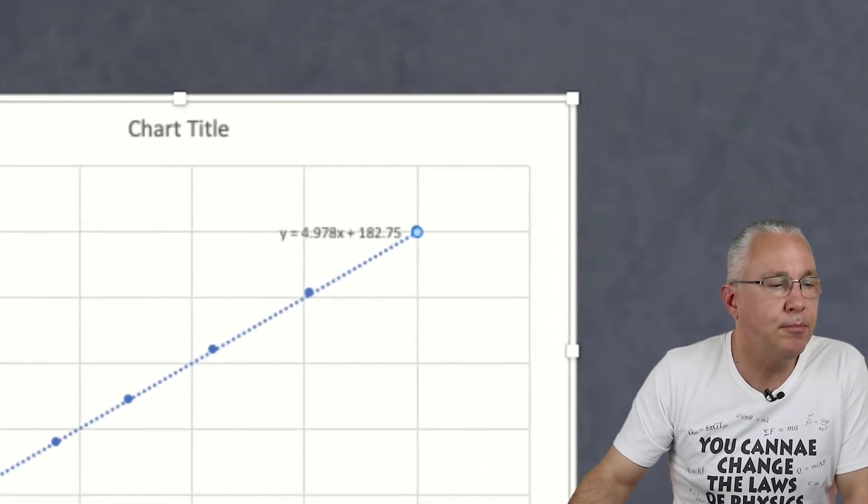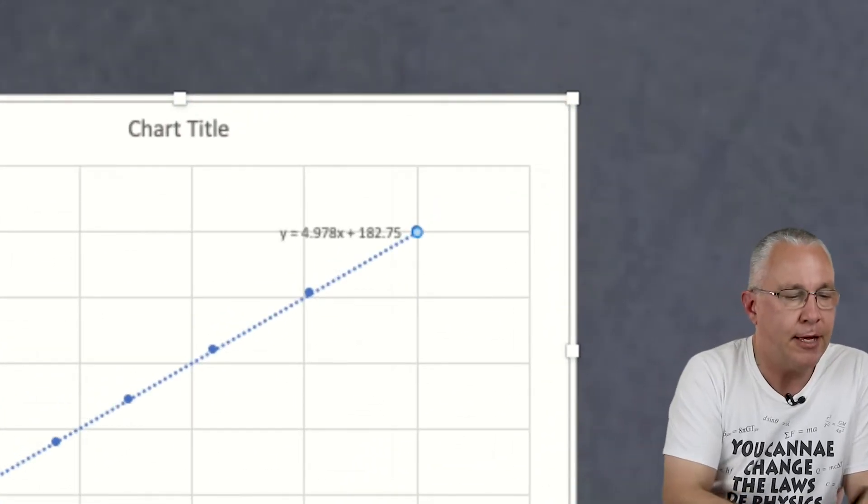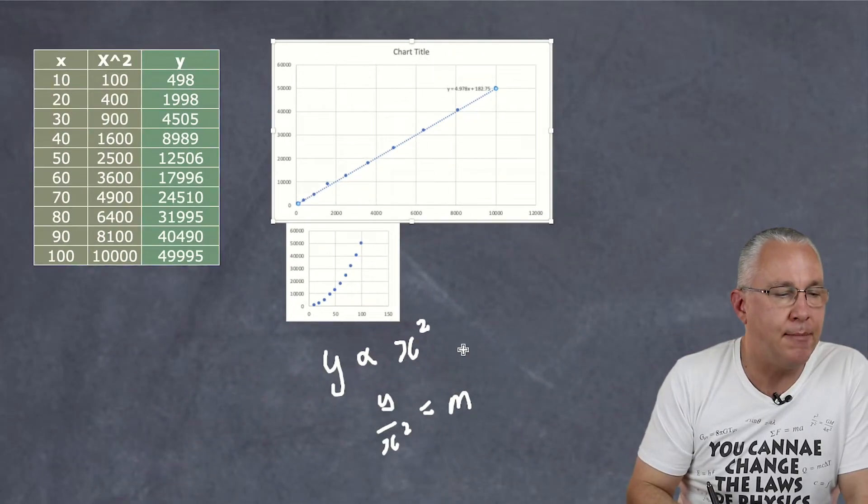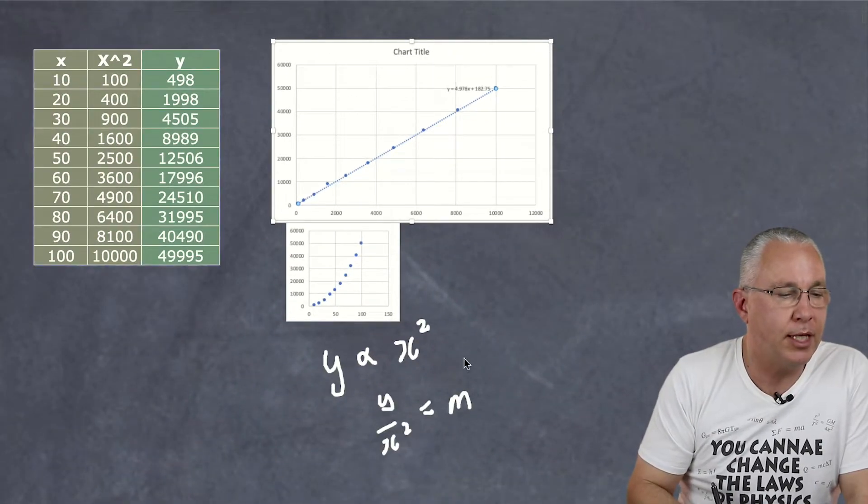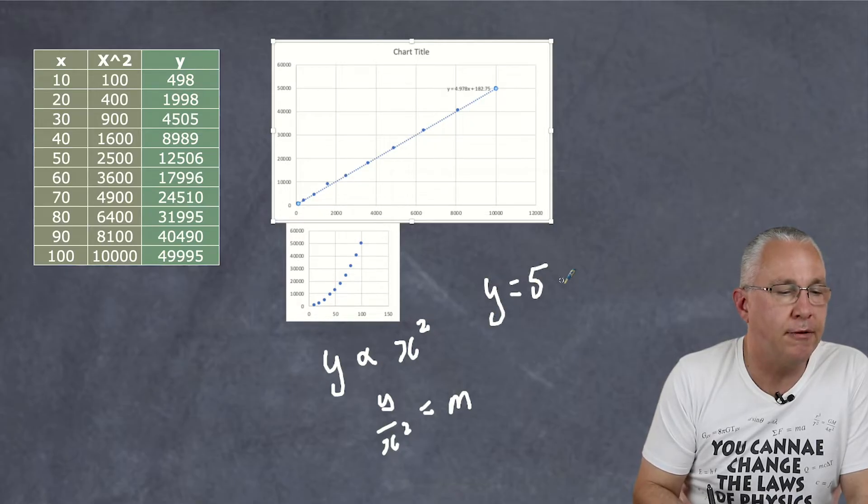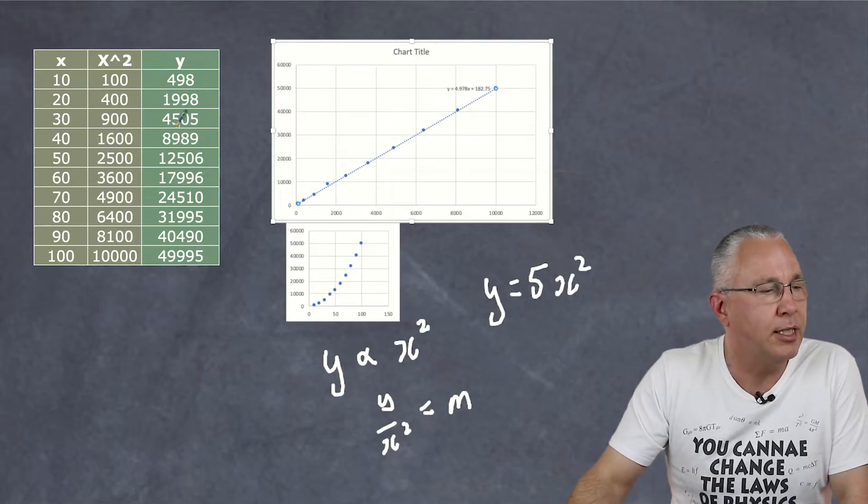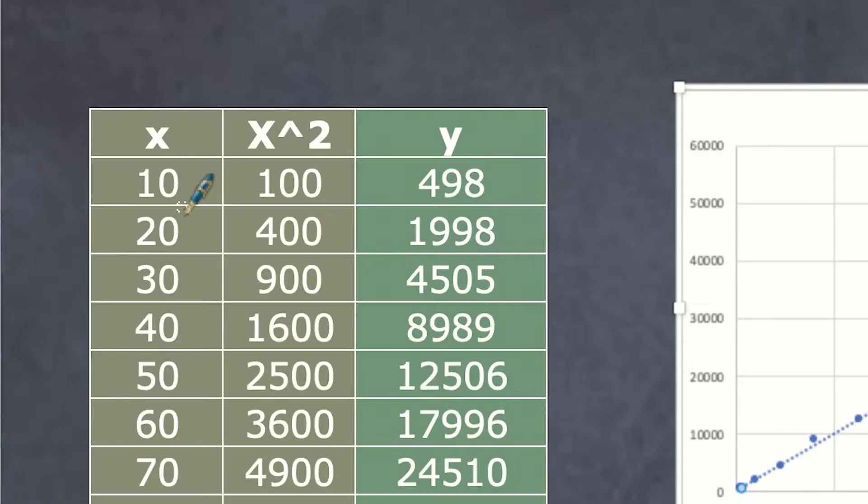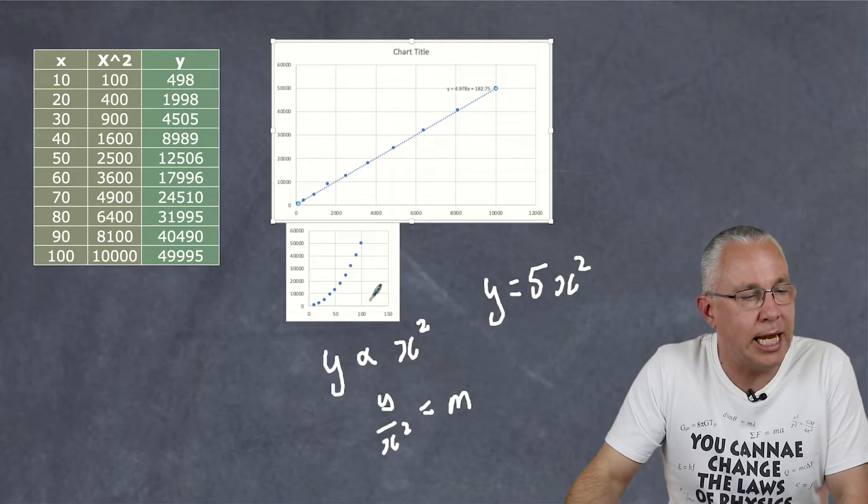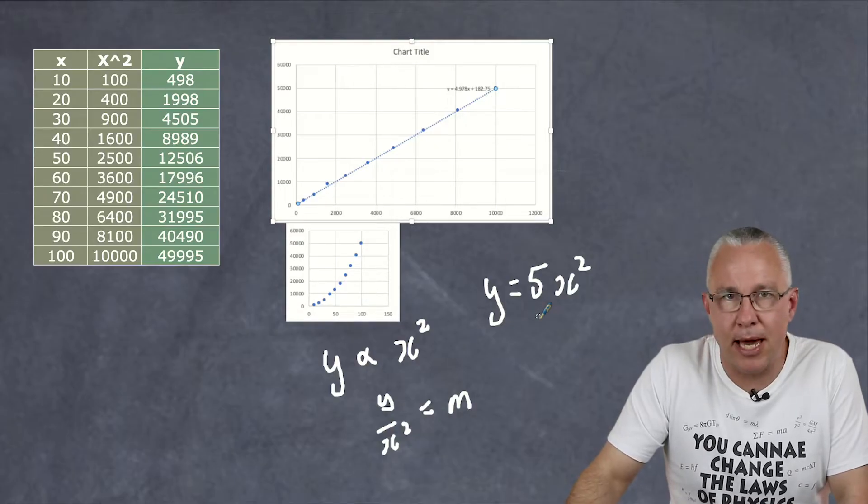So in this case I will simply add a trend line, add the equation to the line. Value here is 4.97 so it's practically 5 and so what I can say is that Y is equal to 5X squared. That's my relationship between those two variables. Does that make sense? Well 10 squared times 5 is 500 so that's close to that. Let's choose 60. 60 squared is 3600 times 5 well that's close to 18,000. And so you can see now that here is my mathematical relationship.